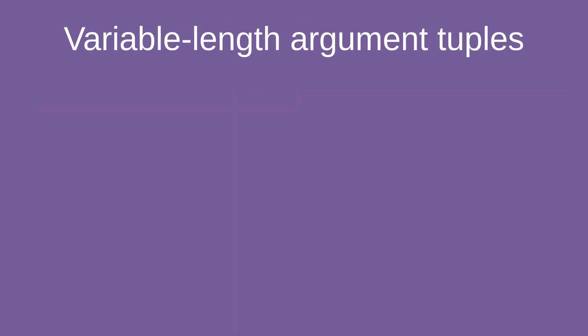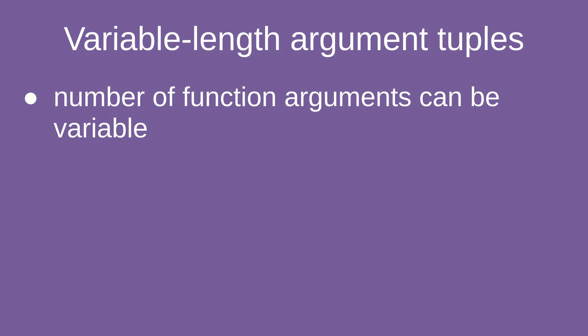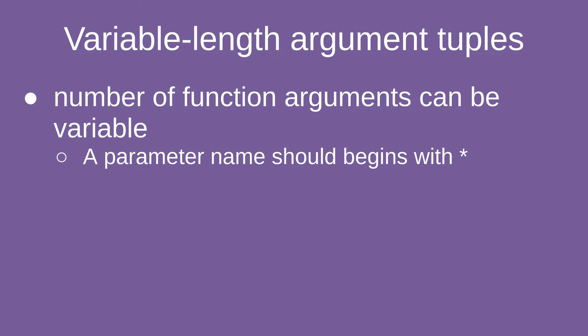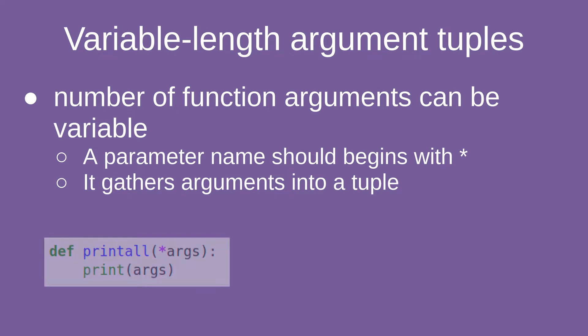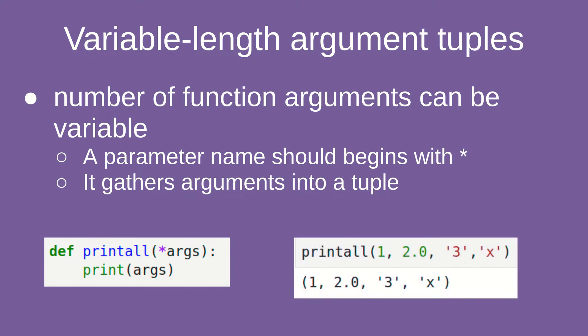Variable length argument tuples: when you want to define a new function but you don't know the number of arguments, you can use variable length arguments. The parameter should start with an asterisk and it will gather all the arguments into a tuple. For example, we can define the function printall using a variable length argument marked with an asterisk, and then invoke the built-in print function in order to print the result.